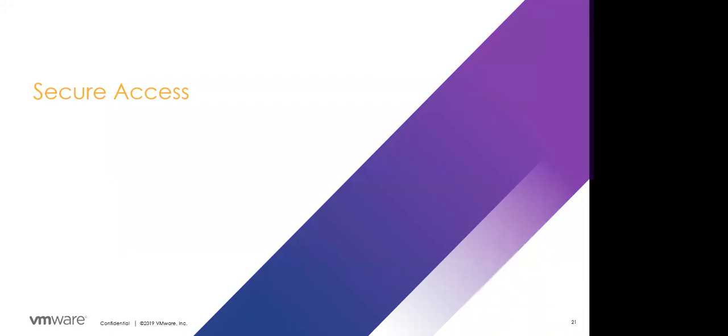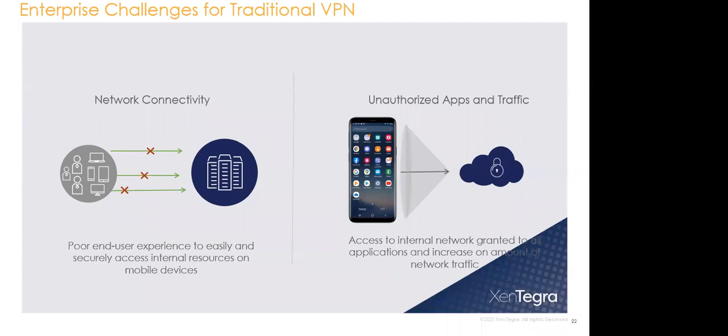Now let's talk about Secure Access. Looking at the traditional VPN infrastructure, the VPN gateway sits in the data center. When a user tries to access an application, they first connect the VPN client to the VPN gateway, and all traffic then routes through the data center to reach cloud or on-prem applications. For cloud-based applications, users often face poor end user experience because of multiple hops, creating a hairpin problem.